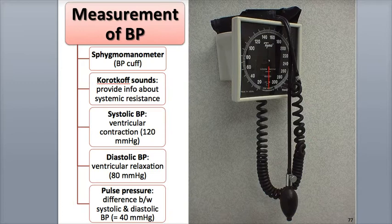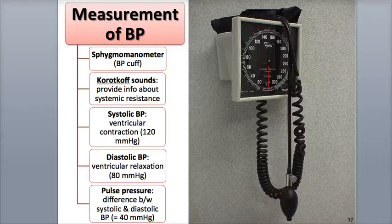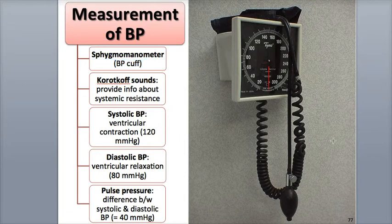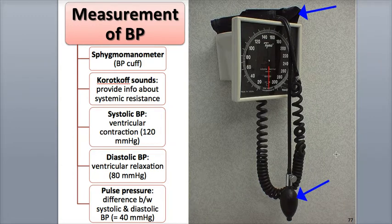Blood pressure is defined as the pressure in the arteries produced by the contraction of the left ventricle during systole, as well as the remaining arterial pressure when the ventricle is relaxing in diastole. It is typically measured in the brachial artery of the upper arm using a blood pressure cuff called a sphygmomanometer, which consists of an inflatable cuff attached to a rubber bulb and a pressure meter that reads the cuff's pressure.